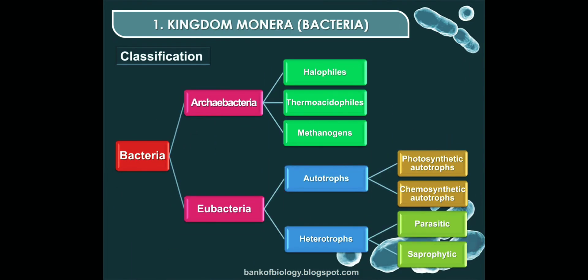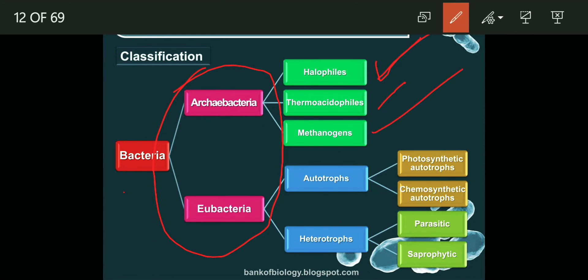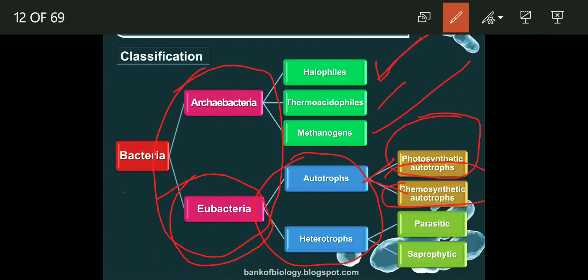The classification of bacteria is done as follows. Bacteria are classified into two groups: archaebacteria and eubacteria. Archaebacteria are classified into three groups: halophiles, thermoacidophiles, and methanogens. Eubacteria are classified into autotrophs and heterotrophs. Autotrophs are further classified into photosynthetic autotrophs and chemosynthetic autotrophs. Heterotrophs are classified into parasitic and saprophytic types.